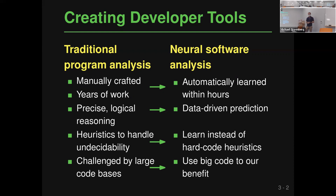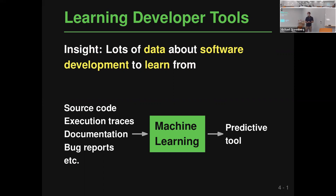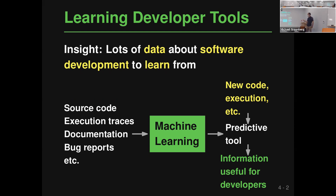The coolest property of neural software analysis is that instead of seeing large code bases as a problem, they become part of the solution — the more code you have, the better. Based on this idea, many techniques in this space share a common pattern: a machine learning model (typically neural) takes as input source code, execution traces, or other software artifacts like documentation or bug reports, and produces a predictive tool that can look at new code and predict useful information for developers, such as bugs.